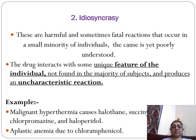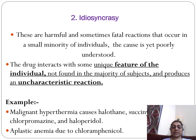Idiosyncrasy refers to harmful and sometimes fatal reactions occurring in a small minority of individuals. The cause is poorly understood. The drug interacts with some unique feature of the individual not found in the majority of subjects, producing an uncharacteristic reaction. Examples include malignant hyperthermia caused by halothane, succinylcholine, chlorpromazine, and haloperidol, and also aplastic anemia due to chloramphenicol. These reactions occur in a small minority, not in the majority of patients.